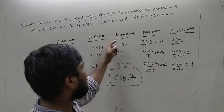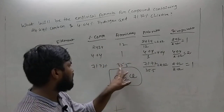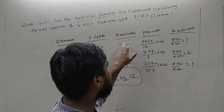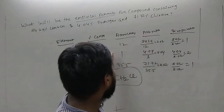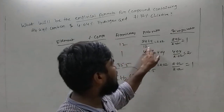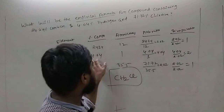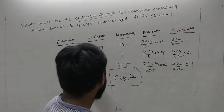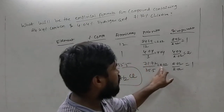Next, note the atomic masses: carbon is 12, hydrogen is 1, and chlorine is 35.5. Then calculate the mole ratio using percentage composition divided by atomic mass. Carbon gives 2.02, hydrogen gives 4.04, and chlorine gives 2.02.